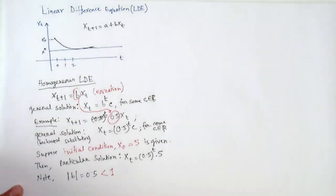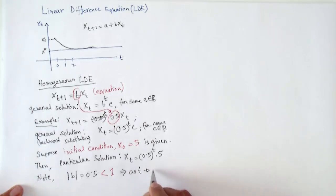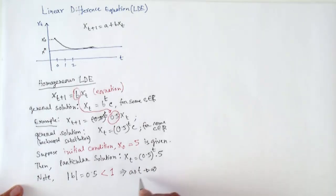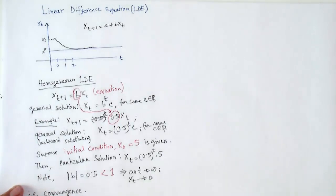Note that |b| equals 0.5, which is smaller than one. This means that the solution is convergent. As t goes to infinity, x_t approaches zero, because 0.5^t approaches zero as t goes to infinity. So this is a convergent system.